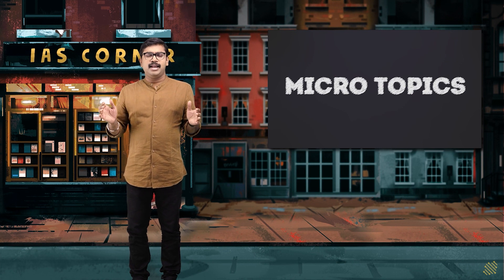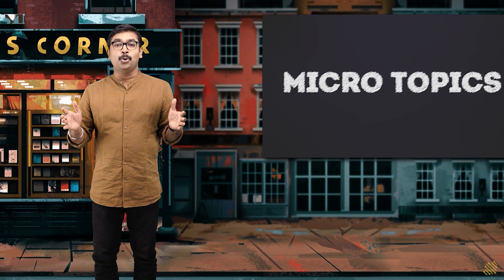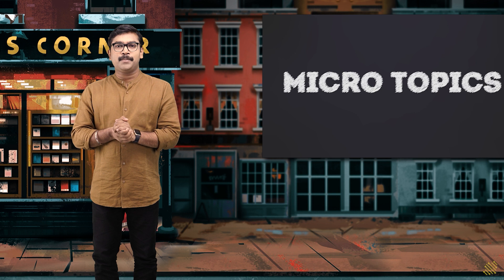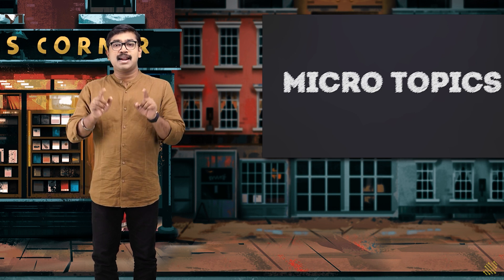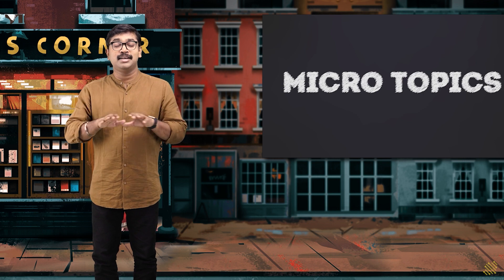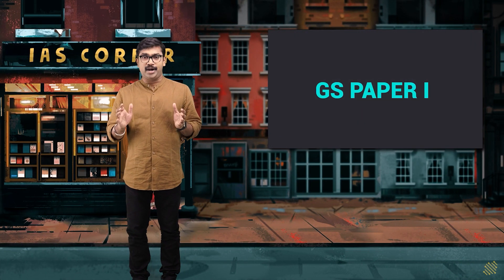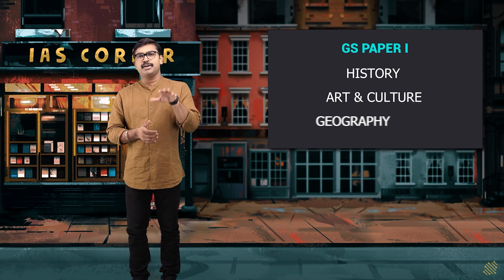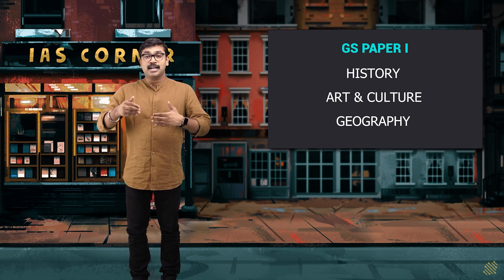When I talk about GS Paper 4, it's all about ethics, integrity, and aptitude. But these are all the major pillars. Is the civil services syllabus complete with this? No, it is not. In this session, I'm going to tell you about the various micro topics included in the syllabus. When I say GS Paper 1, obviously history, art and culture, and geography will come to mind, but that is not complete — there are other micro topics that need to be added.